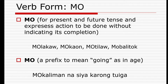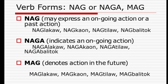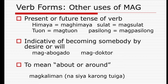Other verb forms: 'nag', 'naga', and 'mag'. 'Nag' may express an ongoing or past action, so you can use it for present perfect and past actions: 'naglakao', 'nagkaon', 'nagtilaw', 'nagbalita'. 'Naga' indicates an ongoing action, similar to present progressive: 'nagalakao', 'nagakaon', 'nagatilaw', 'nagabalita'. 'Mag' denotes action in the future: 'maglakao', 'magkaon', 'magtilaw', 'magbalita'.